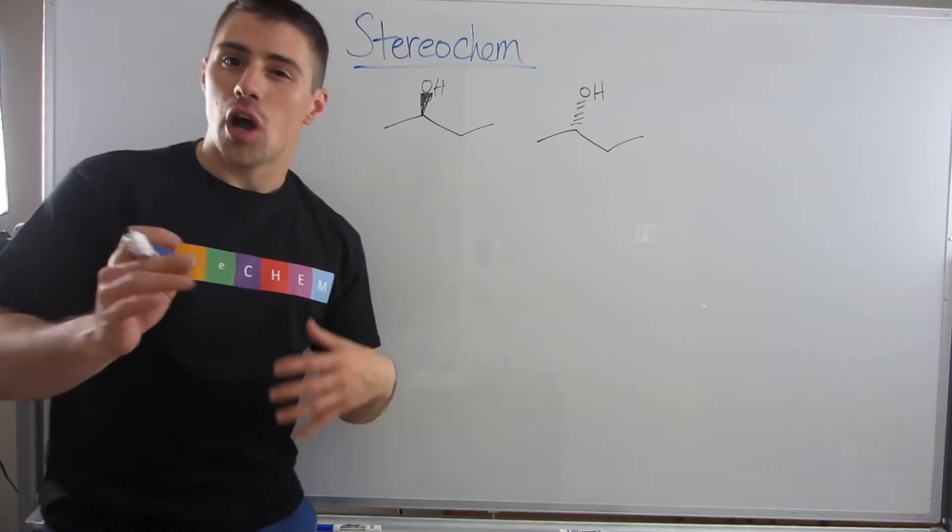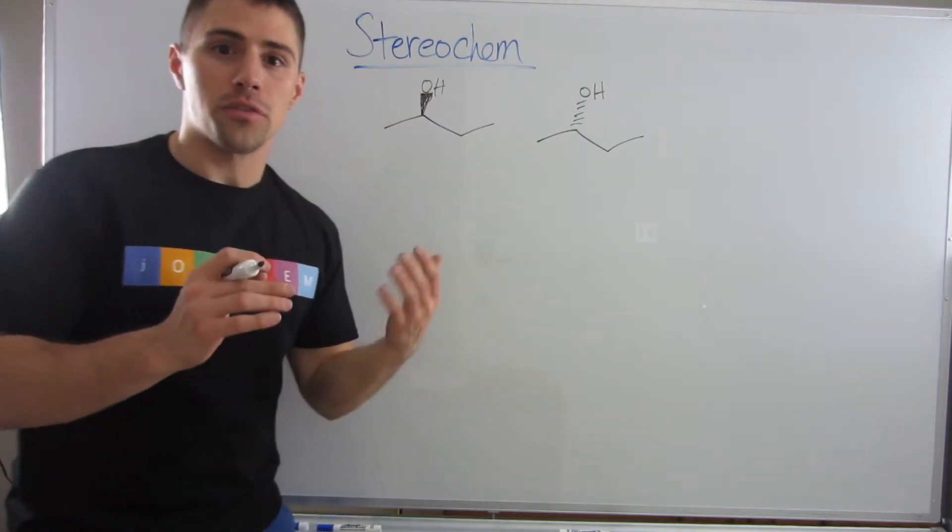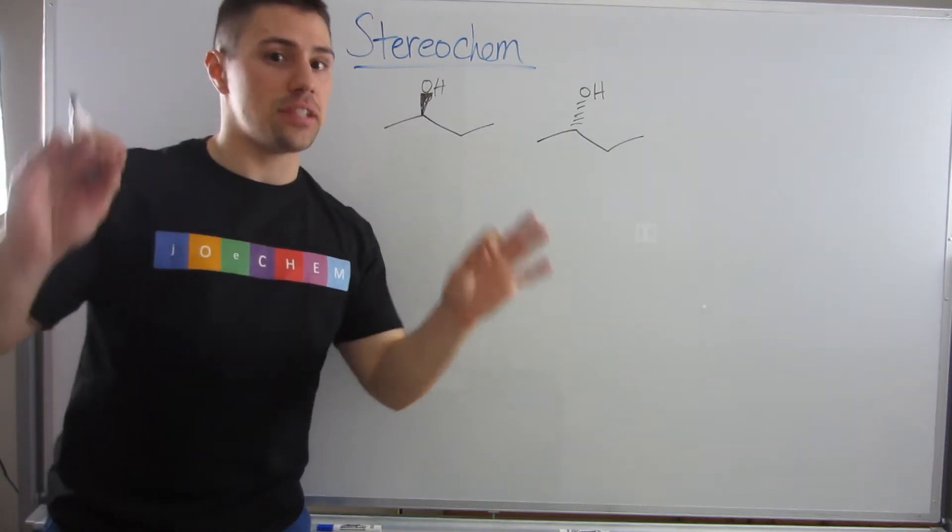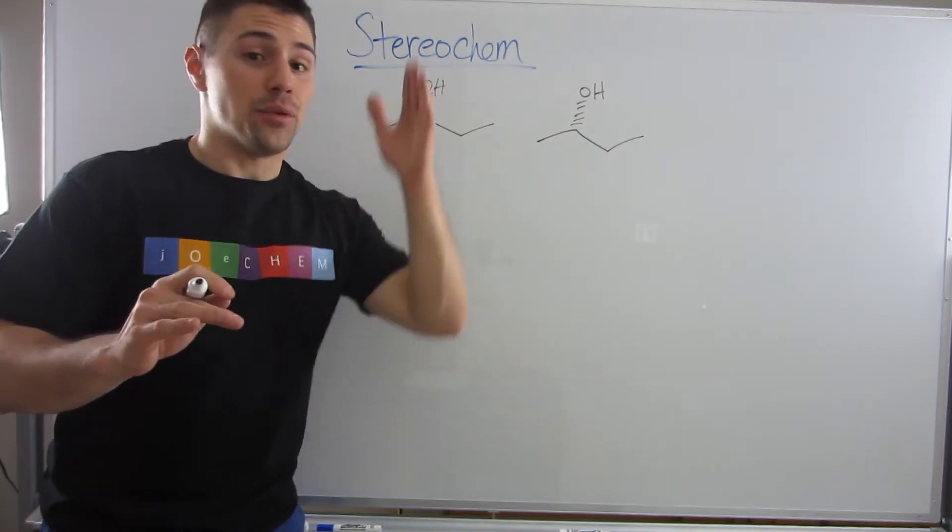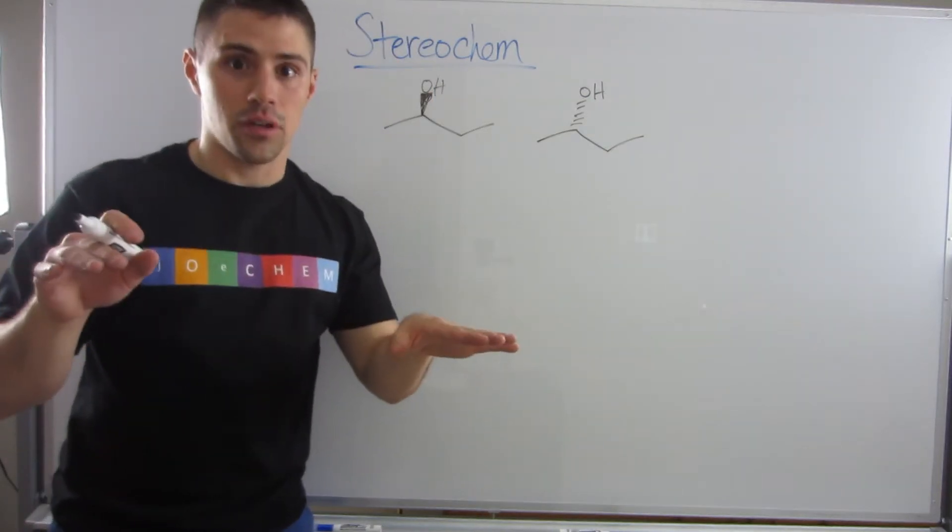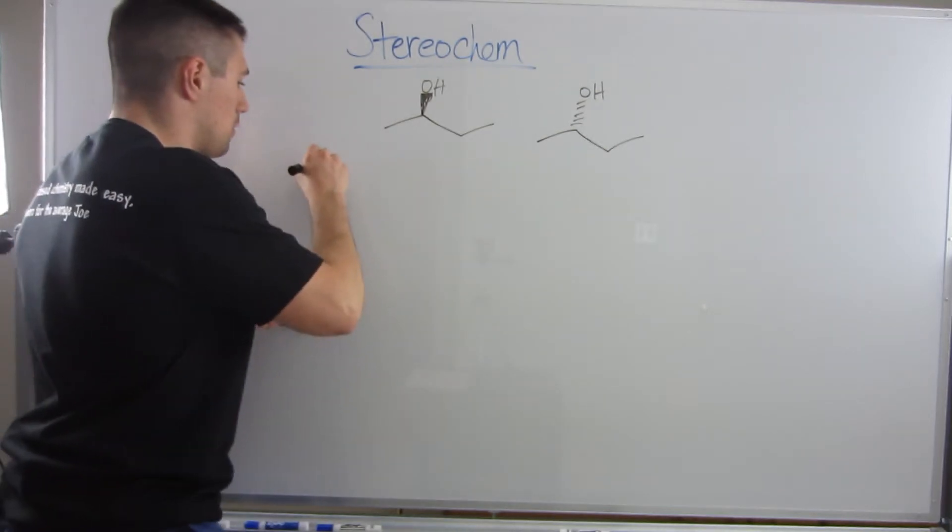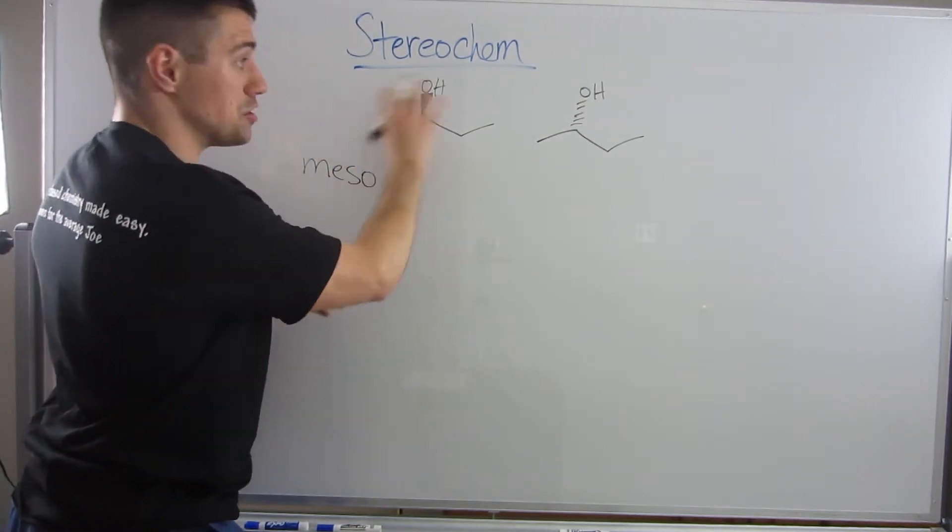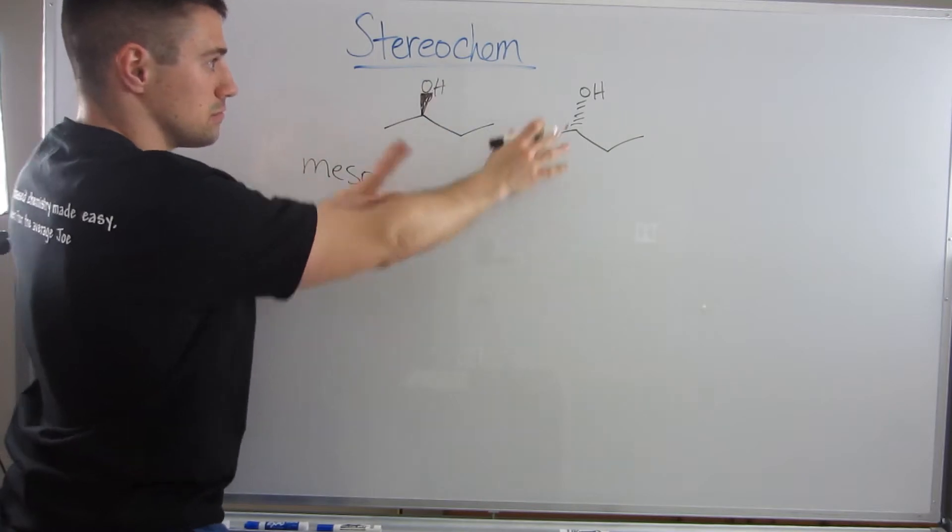However, remember how we talked about meso structures, structures that have a plane of symmetry? And if you have a plane of symmetry, you are achiral. So if being meso, if these are not, these are not meso, these are chiral.